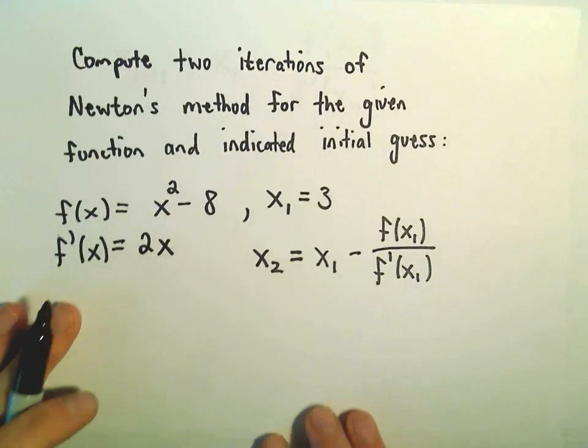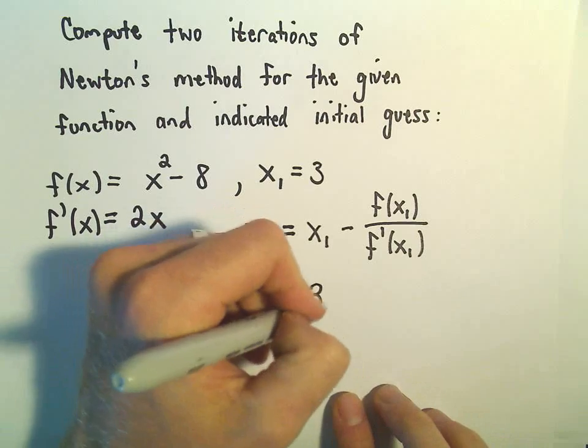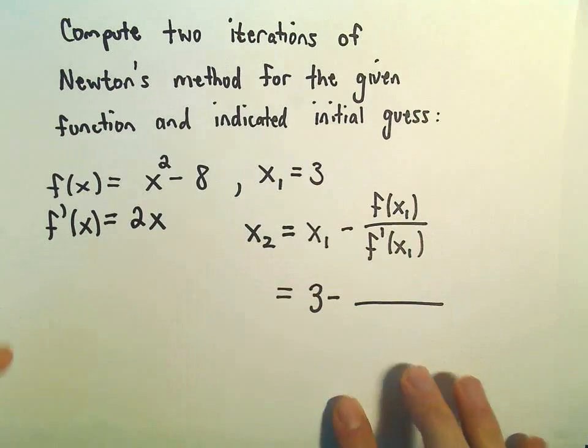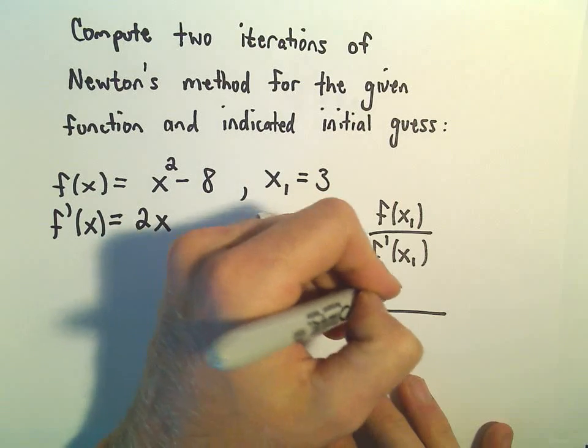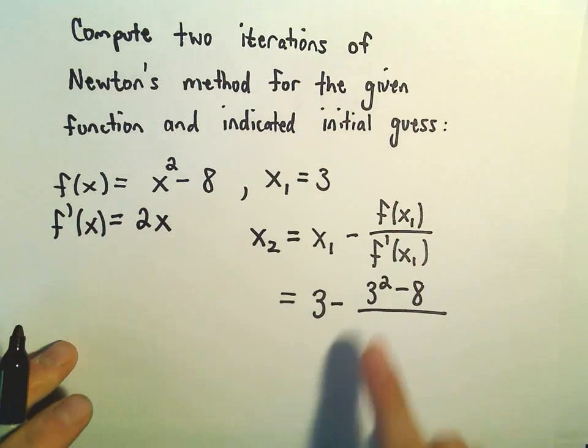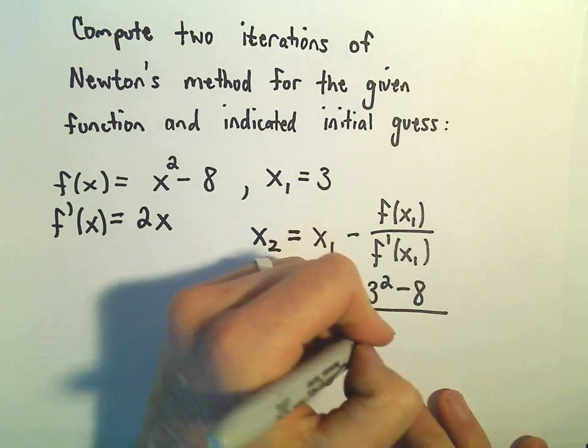So, all right, I'm going to plug, I'm going to evaluate all of these things. So I know that x sub 1, that's 3. Well, if I plug x sub 1 into my function, again, we would just get 3 squared minus 8. If I plug my point into the derivative, okay, I would get 2 times 3.